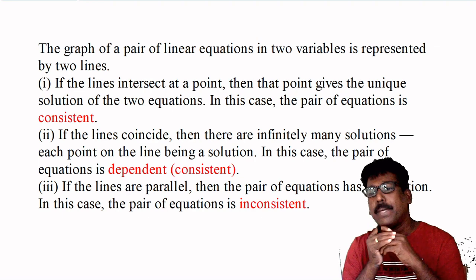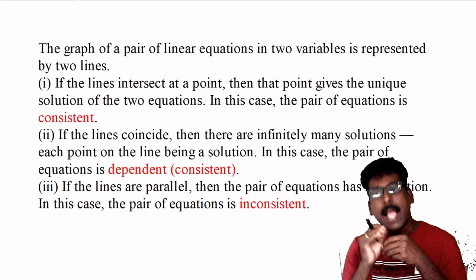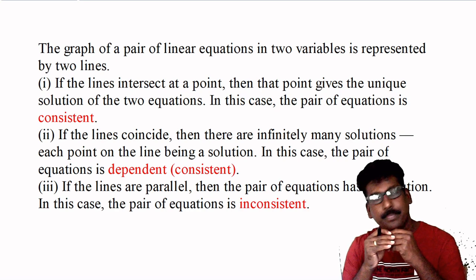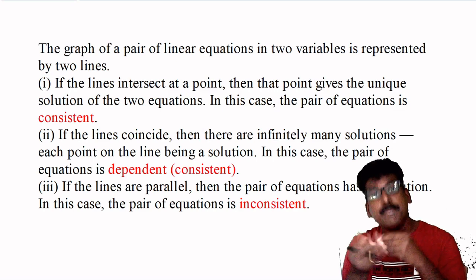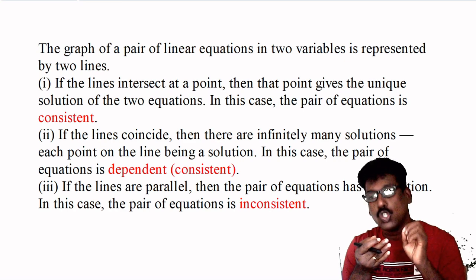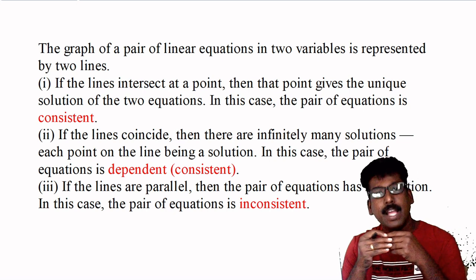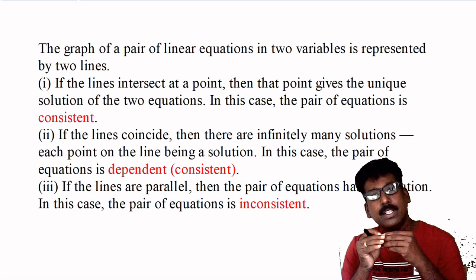To conclude: the graph of a pair of linear equations in two variables is represented by two lines. If the lines intersect at a point, that point gives the unique solution — the pair is consistent. If the lines coincide, the pair is consistent with infinitely many solutions. If the lines are parallel, the pair has no solution and is inconsistent.